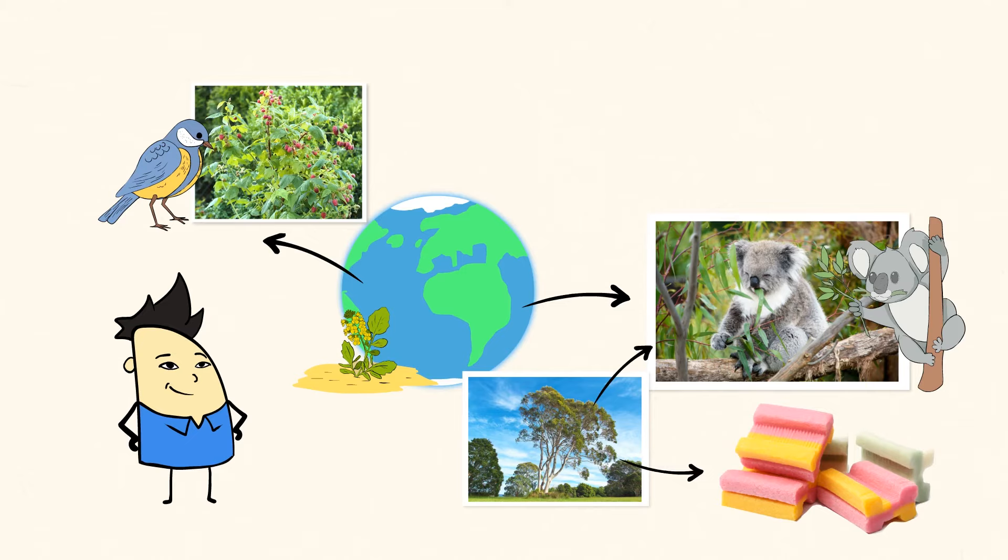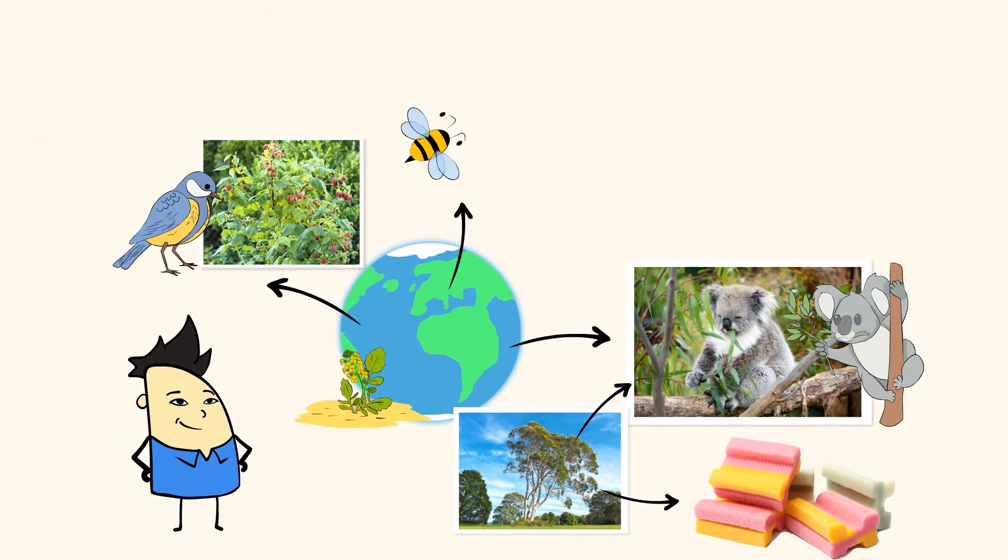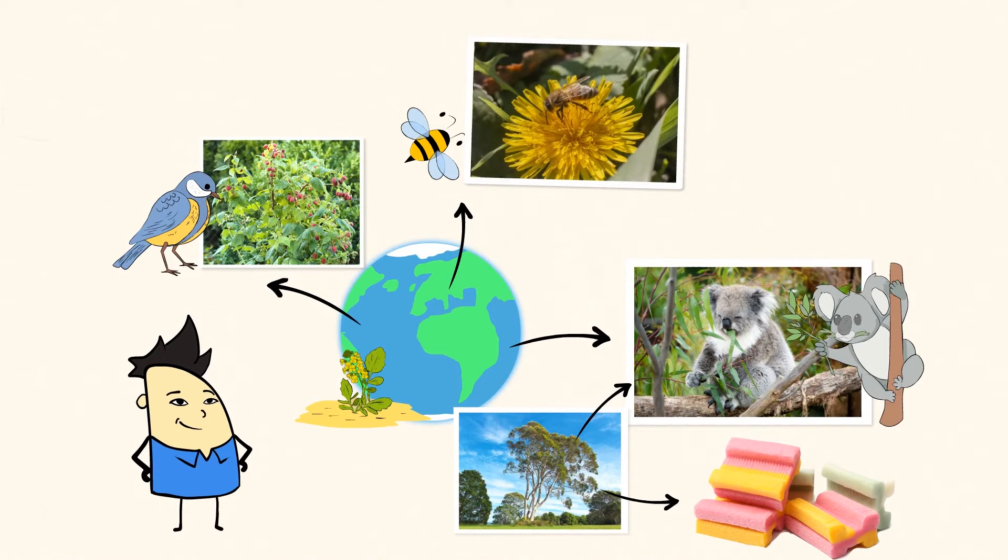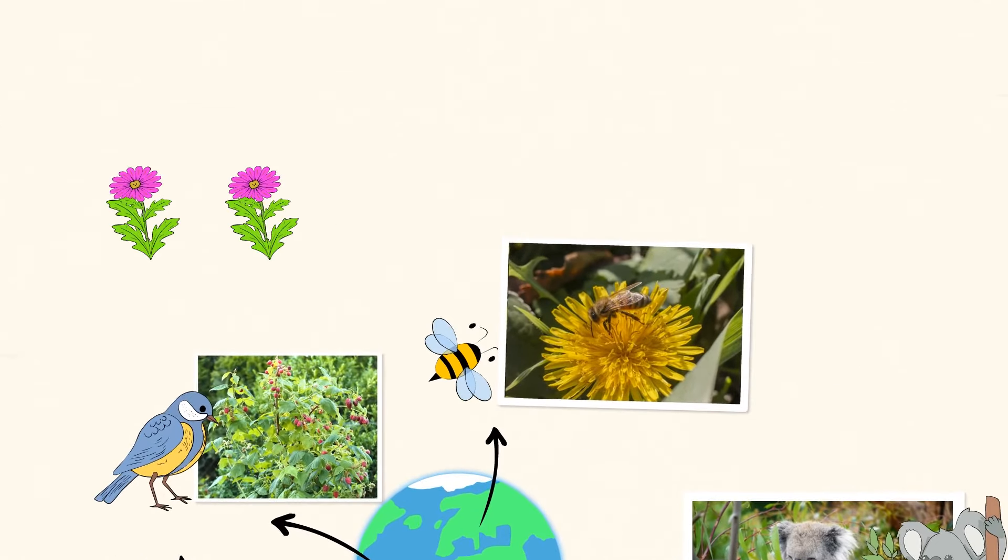And while birds and koalas are great, the bees are probably the most awesome environment changer ever. They move from flower to flower, drinking nectar. Bees then pick up pollen from the flowers and spread them around to grow new flowers. All of these little things add up to lots of changes in the environment.